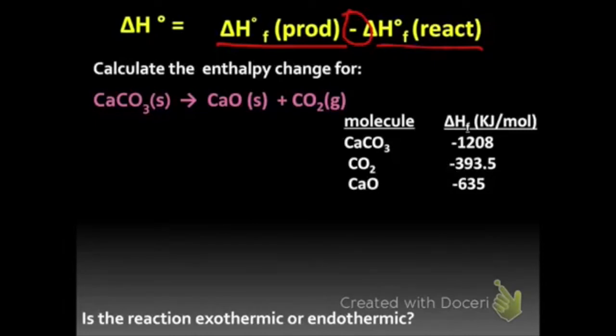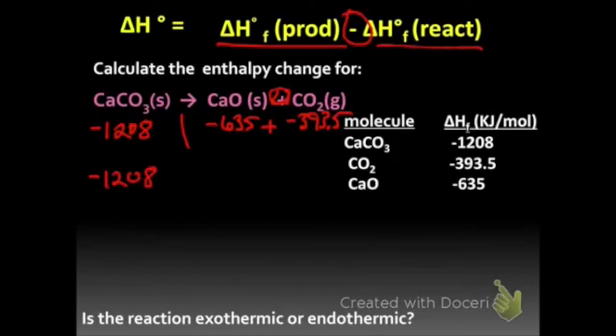So we are given a little mini table just for what we need for this one. So I can basically almost plug these in. So CaCO3 was negative 1208, and then CaO is negative 635, and CO2 is negative 393.5.